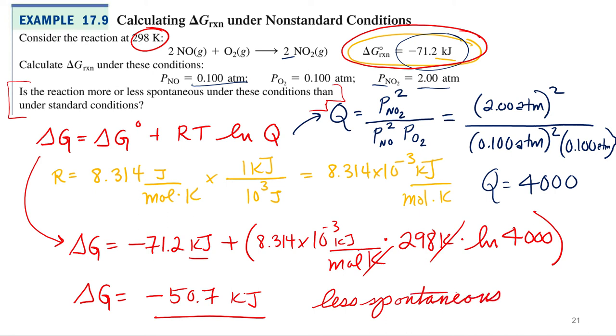And for some reason, I wanted to write in cursive. A better question would have been, can you get more or less work out of this system? Because remember, that's what delta G was originally meant to do. That's why it's called free energy. How much energy can you get out of this to do work? And so at standard state conditions, you can get 71.2 kilojoules to do work. Now you can only get 50.7, less work. It can do less work.